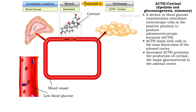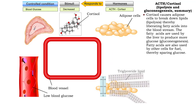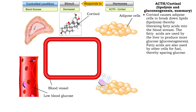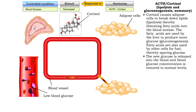Cortisol also targets adipose cells. It causes adipose cells to break down lipids, a process called lipolysis, thereby liberating fatty acids into the bloodstream. The fatty acids are used by the liver to produce more glucose, and are also used by other cells for fuel, thereby sparing glucose and allowing the return to normal blood glucose levels.